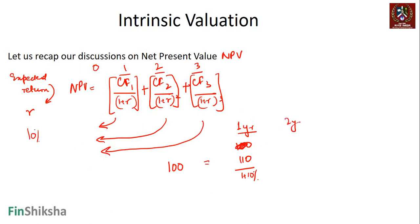If you are expecting an instrument that gives you 121 rupees at the end of two years and nothing until then, and your expected return is still 10%, the price should be 100 — because 100 × (1 + 10%)² equals 121. That makes sense — this is the recap of our NPV analysis.